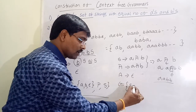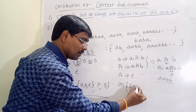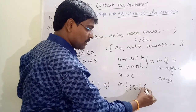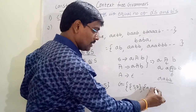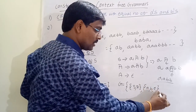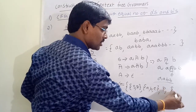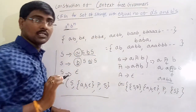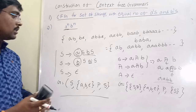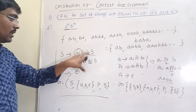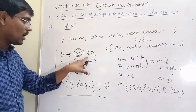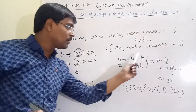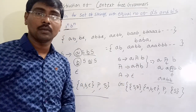The final grammar G equals (V, T, P, S) where V contains non-terminals S and A, terminals are a, b, epsilon, and the production rules are S → aAb and A → aAb | ε, with start symbol S. These are the two grammars: one without any constraint on order of a's and b's, and one where a's are followed by b's. Thank you.